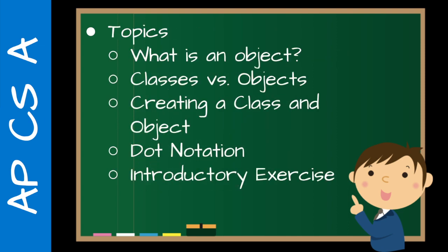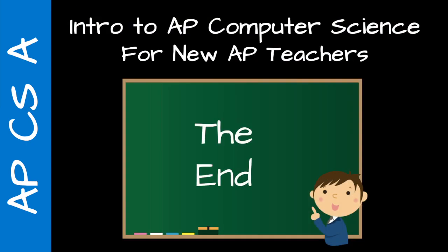So we talked about what an object is, the relationship between classes and objects, how to actually create a class and create an object, and the idea of dot notation — we understand what it is and now we know the name for it. Hopefully a helpful introductory exercise that builds on the things that have come before. Thanks for watching — have a good one.